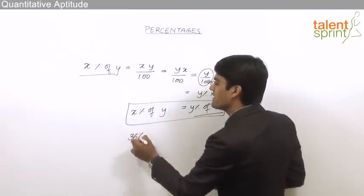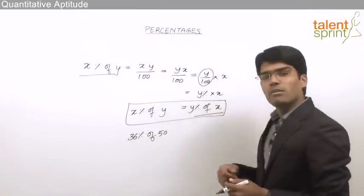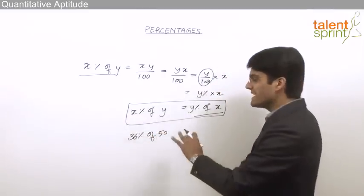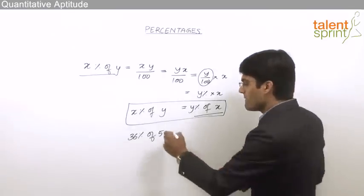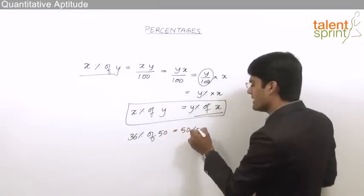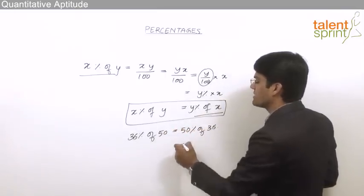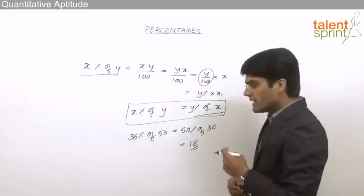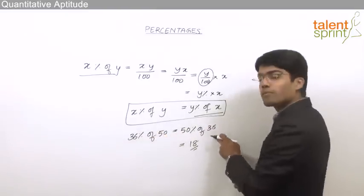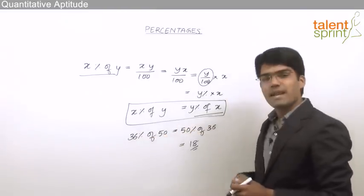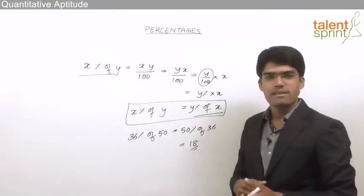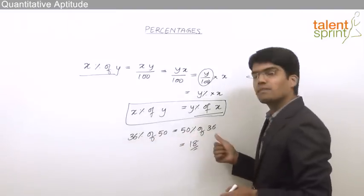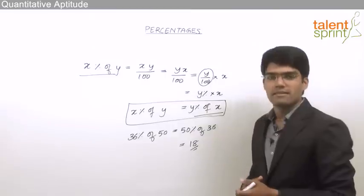This point may be useful in doing certain calculations. For example, to find 36 percent of 50 — instead, take it as 50 percent of 36, which is simply half of 36 equals 18. So the calculation becomes much faster. 36 percent of 50 takes some time to calculate, but 50 percent of 36 is simply half of 36, which is 18.